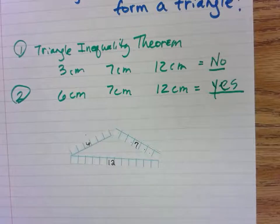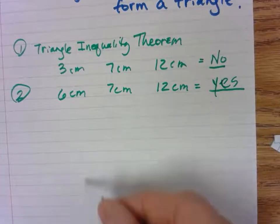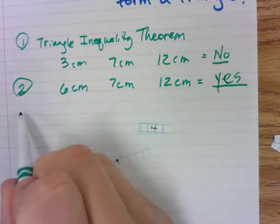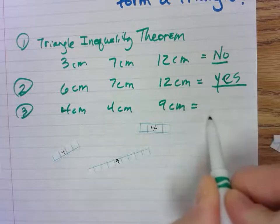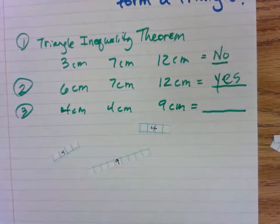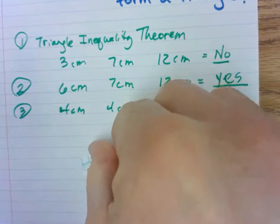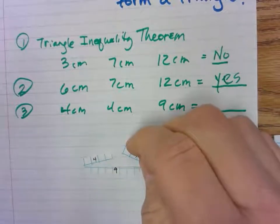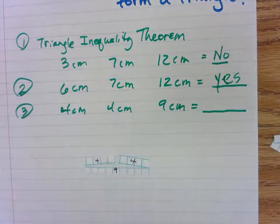Let's try another one — this time four, four, nine. So I've got a four centimeter piece, another four centimeter piece, and a nine centimeter piece. Do you think those three lengths are going to form a triangle? I've got my nine down here, I'll barely touch the four there, and barely touch the other four there. Let's keep leaning them down — do you think the four, four, nine is ever going to meet and form a triangle? The answer is no, it is not.